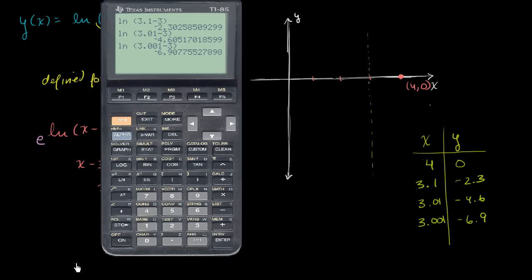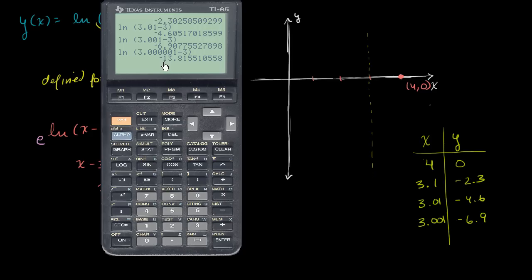And just for fun, let's do one that's way more dramatic. So let's take the natural log of 3.00001 minus 3. And we get a fairly more negative value right over here.